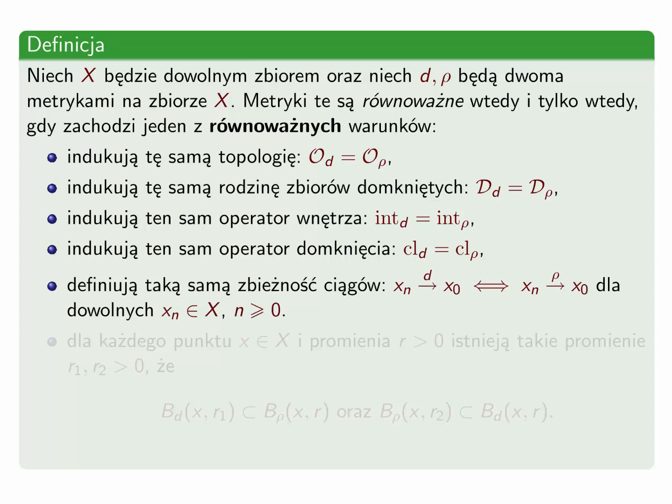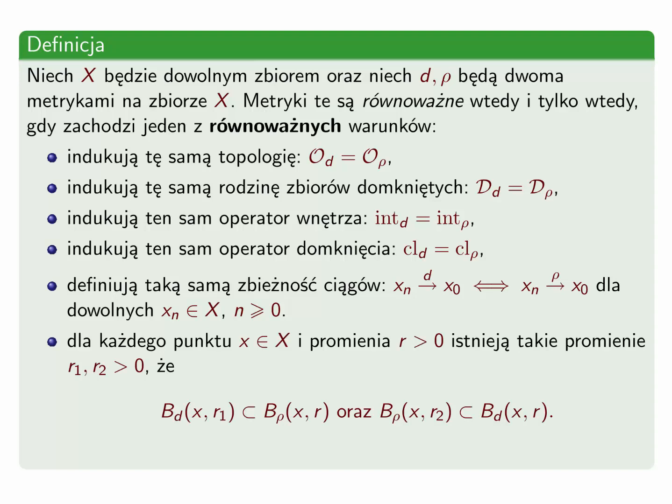Kolejny ważny równoważny warunek w terminach zbieżności ciągów. Otóż równoważność metryk oznacza, że metryki te definiują taką samą zbieżność ciągów, czyli ciąg xn zbiega do x0 względem jednej metryki wtedy i tylko wtedy, gdy zbiega względem drugiej metryki. I ostatni warunek równoważny, najbardziej geometryczny: dla każdego punktu x należącego do x i promienia r większego od zera istnieją takie promienie r1, r2, że kula względem metryki d o promieniu r1 zawiera się w kuli względem metryki ρ o promieniu r.